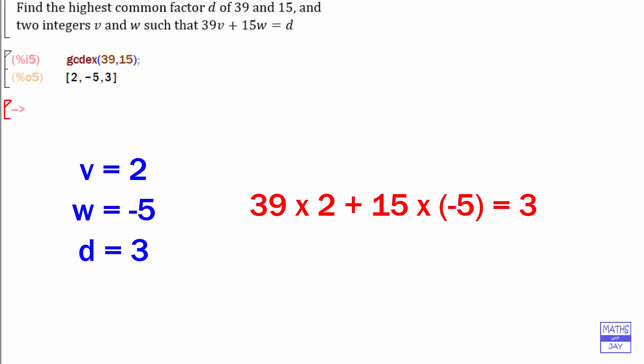It's really important that you get them in the right order. What you get out are the values of v, w, and d. So this is telling us that 39 times 2 plus 15 times negative 5 is equal to 3. So we've got 78 minus 75 is 3. So we've got a combination of the original two numbers ending up giving us the highest common factor.